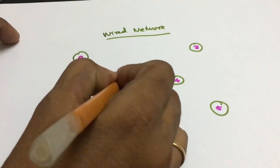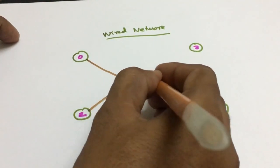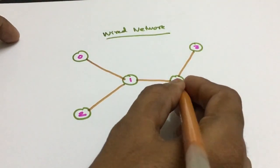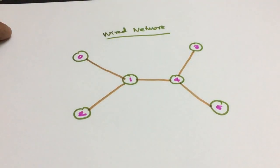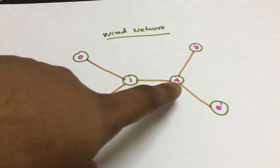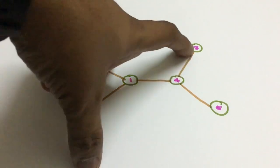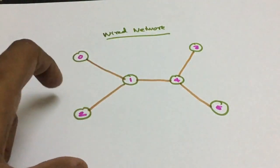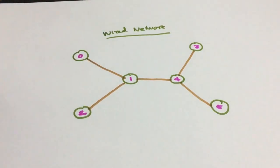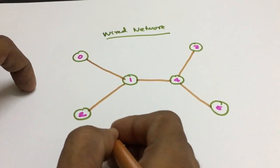I will join the nodes accordingly. So from 0 to 1 there is a link, from 1 to 4 there is a link, from 3 to 4 there is a link, from 4 to 5 there is a link, and from 1 to 2 there is a link. Most of these links are what we call duplex links.